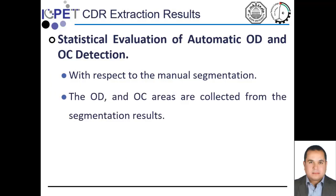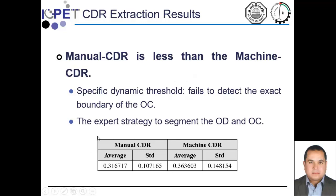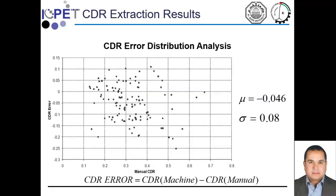The results of the cup-to-disc extraction method were compared with manual segmentation done by Dr. Wissam Shada from King Abdullah University Hospital in Erbil, Jordan. We found that our method produces results close to the manual cup-to-disc ratio, with standard deviations close to each other. As you can see, the machine results from our algorithm show a very small difference in average and standard deviation compared to the manual results. The cup-to-disc error distribution analysis shows that the error rate is low and the standard deviation is also low.